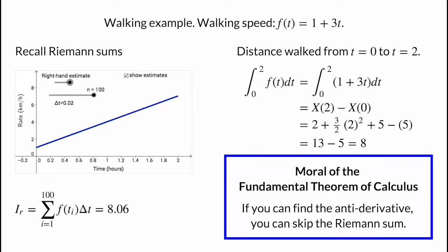The moral of the story is that the fundamental theorem of calculus can save you a lot of work. If you can find the antiderivative of f of t, you don't need to compute Riemann sums — just use the fundamental theorem of calculus instead. We have to admit, in general, that's a big if: finding an antiderivative of a complicated function f of t could be difficult or even impossible. But we'll focus on simple enough functions so that we can compute the antiderivative and use the fundamental theorem of calculus.